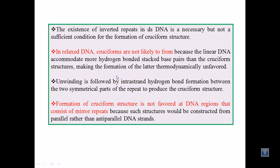This kind of cruciform DNA formation is generated just before DNA replication begins, at the start of the cell division cycle. Another important point is that cruciform structure formation is not favored at DNA regions consisting of mirror repeats, because such structures would be constructed from parallel rather than anti-parallel DNA strands. We need palindromic sequences on anti-parallel strands to form cruciform DNA. If we only have mirror sequences, they will not interact to form cruciform DNA.